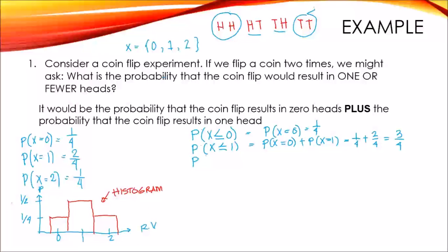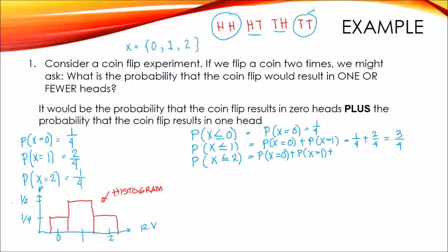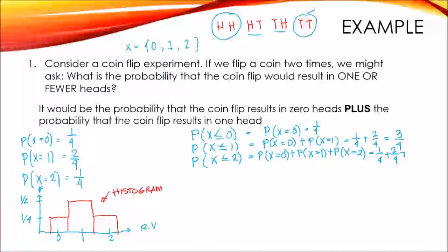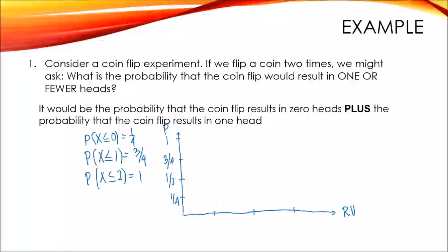Then lastly, the probability when x is less than or equal to two is the probability when x equals zero, plus the probability when x equals one, plus the probability when x equals two. That is one-fourth plus two-fourths plus one-fourth, which equals one. So our cumulative probability values are: P(x ≤ 0) = 1/4, P(x ≤ 1) = 3/4, and P(x ≤ 2) = 1.